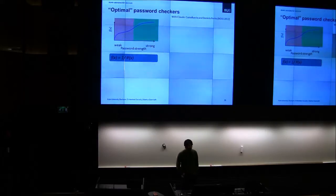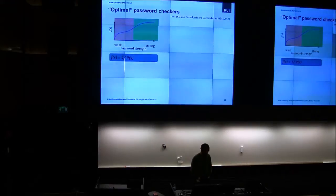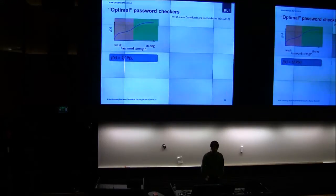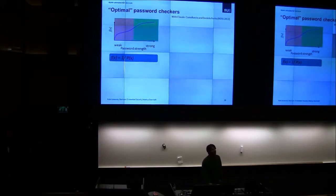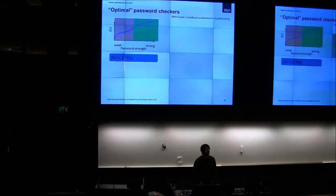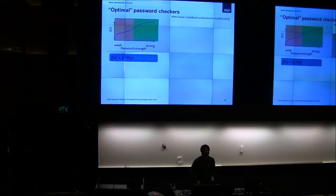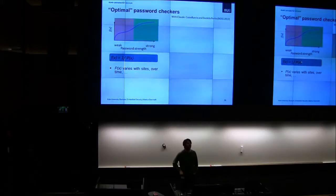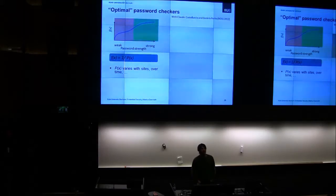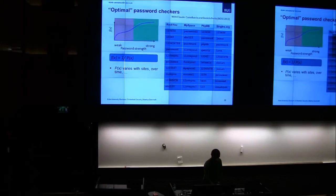Our idea: what would be an optimal password checker? We define the optimal password strength meter as one that outputs a score inversely proportional to the likelihood of the password. Intuitively, if a password is likely, the score is low; if unlikely, the score is high. The question is how to obtain the likelihood. We could base it on available data, but that likelihood depends on the site and may change over time.